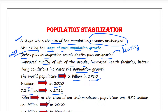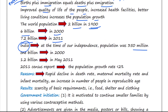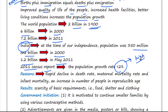A similar trend was observed in India too. At the time of our independence, our population in India was 350 million. It reached 1 billion by 2000 and crossed 1.2 billion in May 2011. According to the 2011 census report, the population growth rate was less than 2%, which is very high.